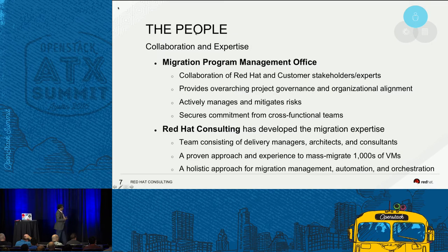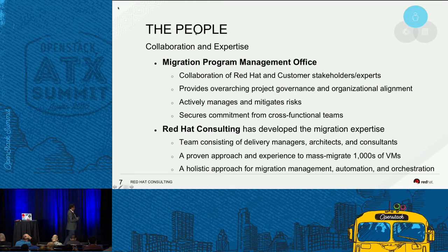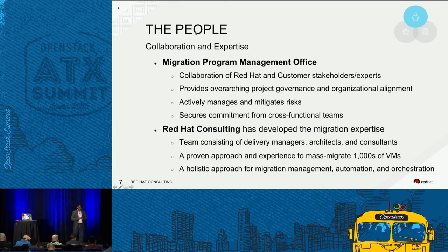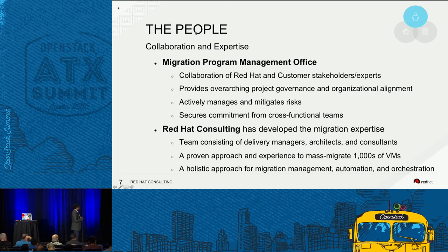To bring people together and collaborate, Red Hat builds a migration PMO where we work with our internal Red Hat stakeholders and customer stakeholders to build a combined team to manage and mitigate risk and secure the commitment of different teams. This is not where the security team comes in at the very end and says they weren't involved. We want to bring all the teams together ahead of time to make sure migrations are successful. Red Hat has developed expertise in this migration tooling to help customers migrate massive workloads.